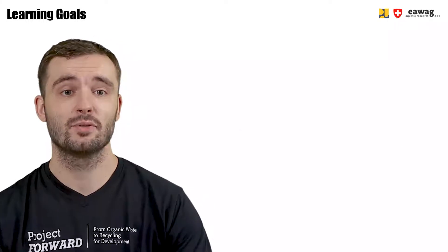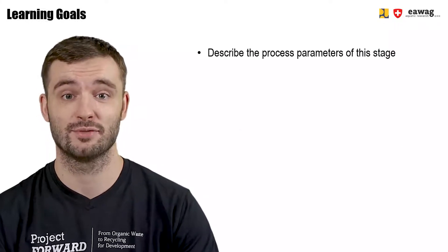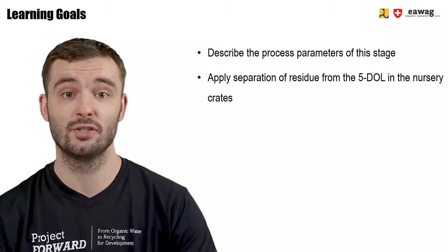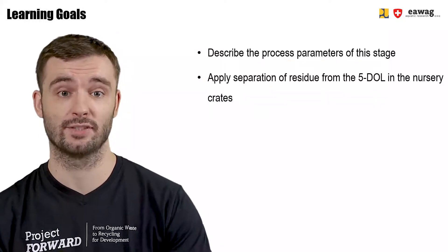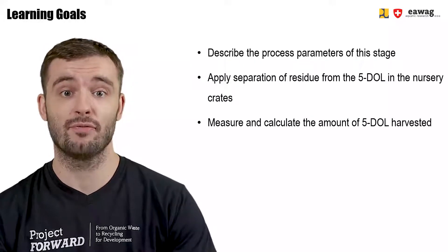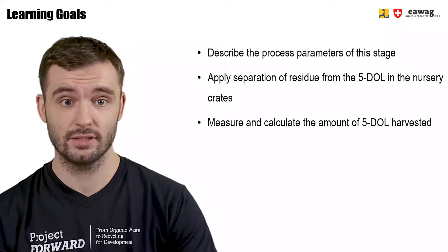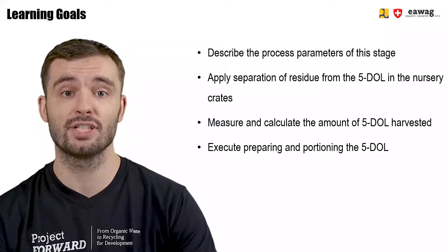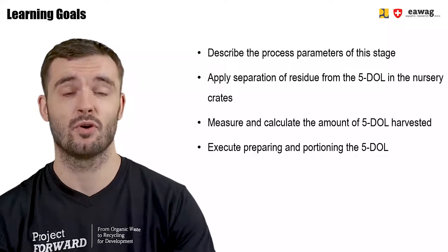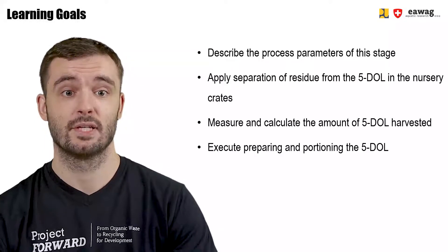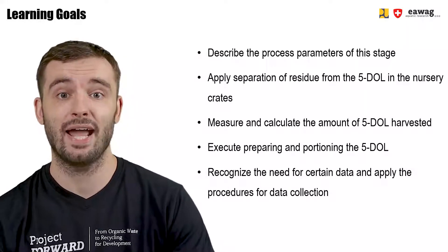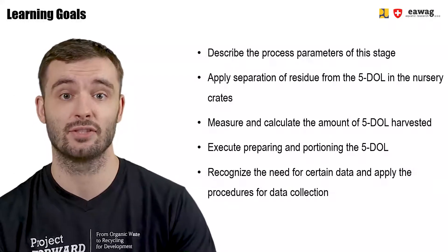After watching this module, you'll be able to describe the process parameters of this stage. You'll be able to apply the separation of the residue from the five-day-old larvae in the nursery crates. You'll be able to measure and calculate the amount of five-DOL that you have harvested, and you'll be able to execute preparing and portioning the five-DOL in preparation for waste treatment or nursery. Lastly, you'll be able to recognize the need for certain data and apply the procedures for the data collection of this stage.